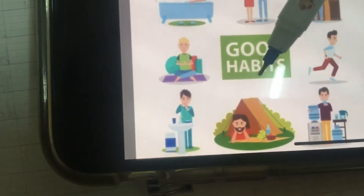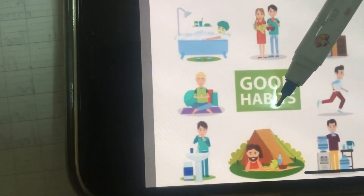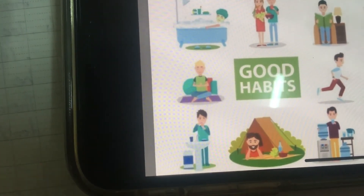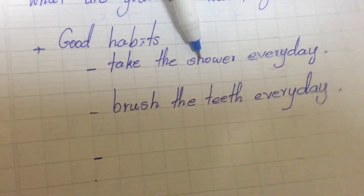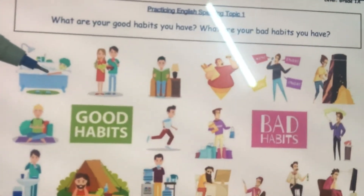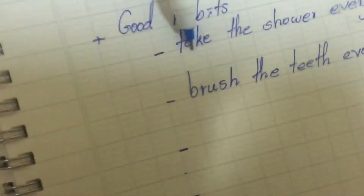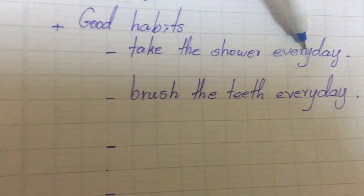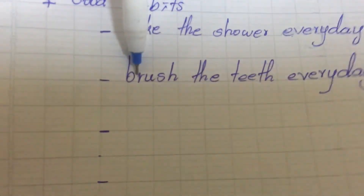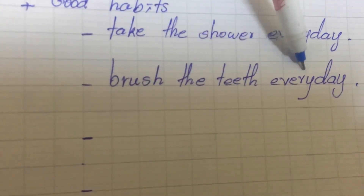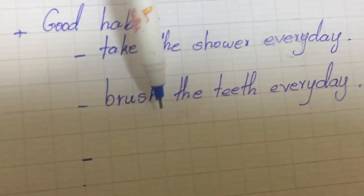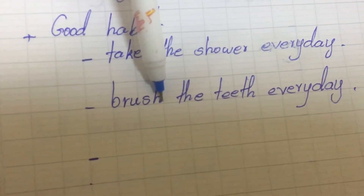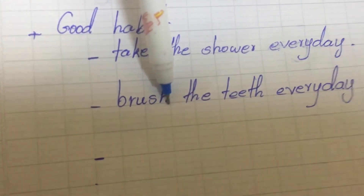The pictures show you about good habits. Write them down in your book, and after that record a voice clip for me. I give you one example: look at the picture of taking a shower and write the sentence 'take the shower every day.' Look at the picture of brushing teeth and write 'brush the teeth every day.' When you finish all the pictures and sentences, record me a voice clip. That's all for today, see you tomorrow.